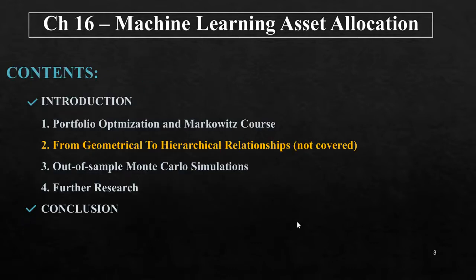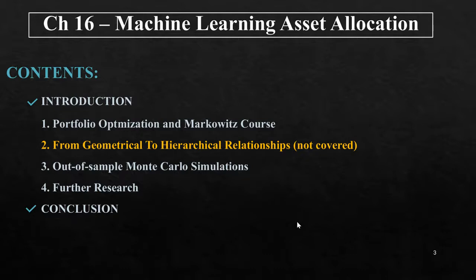As contents to explore, aside from the introduction and conclusion, we will cover portfolio optimization and Markowitz scores. The section 'From Geometrical to Hierarchical Relationship' is part of this chapter but will not be presented due to being too technical, with mathematical explanations and Python code, which I recommend you take a glance at if you want to go deeper. And finally, the out-of-sample Monte Carlo simulations, we will speak about those too, along with some ideas from other authors on further research.